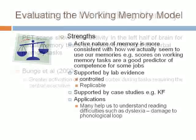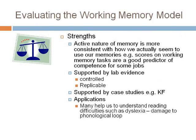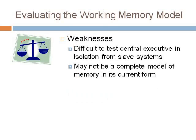Unlike the multi-store model, the Working Memory model seems to have more strengths than weaknesses. A particular strength is the view of memory as an active dynamic system, the support from controlled lab evidence and case studies, and its applications, which can be used to understand reading difficulties like dyslexia. One of the key weaknesses is that the central executive has been seen as almost impossible to test, and this is a problem for the model. It performs a supervisory planning role which is very abstract, and it is very difficult to design a task that actually tests that role.